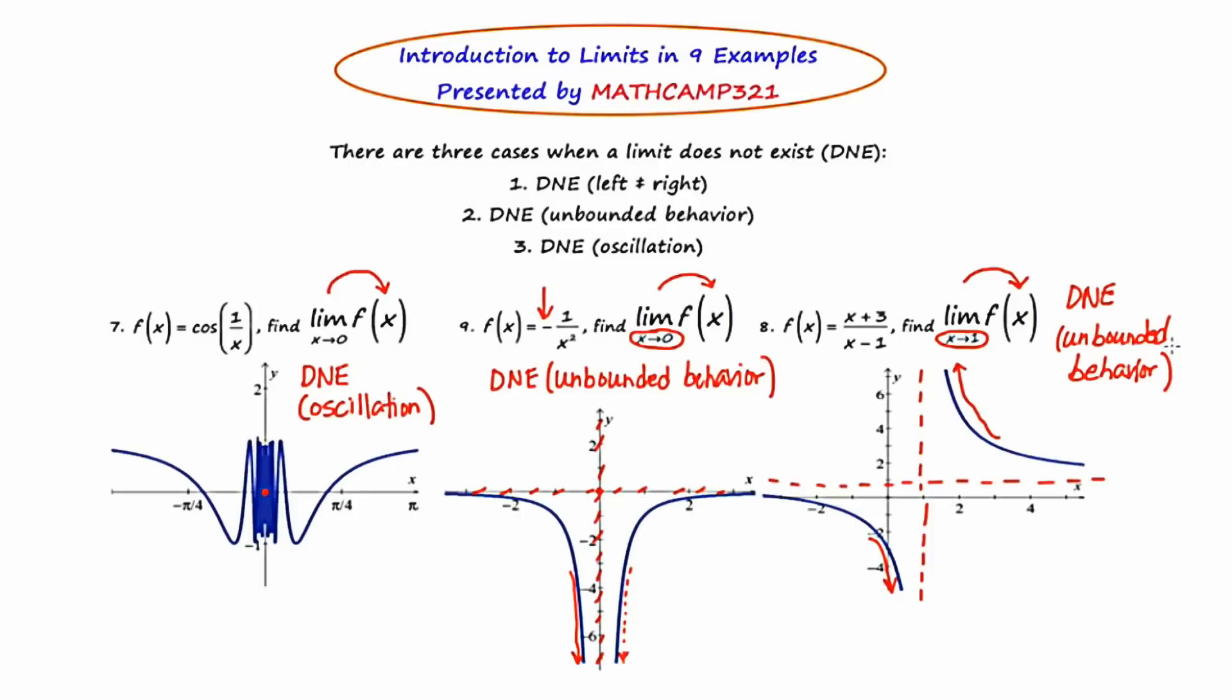And you might be wondering why I didn't give an example of DNE left does not equal right, but we actually did cover that in a prior example. I think it was number five or four, something like that. So anyway, this has been the video on the introduction of limits, we'll call limits 101, just the real basic idea here. And a couple things that I'd like you to take away, and that is that there's actually a lot more to it than this, but this gives you a nice foundation.